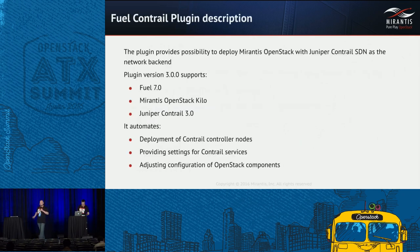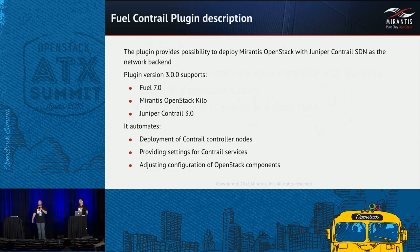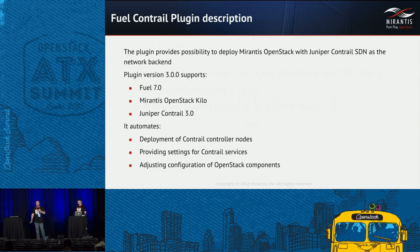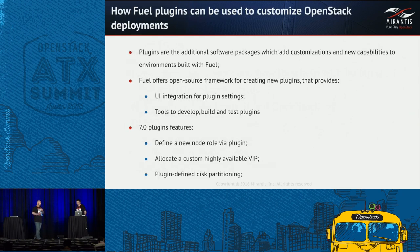Let me quickly explain the Fuel Contrail Plugin description. The Fuel Contrail Plugin provides the possibility to deploy Mirantis OpenStack with Juniper Contrail SDN as a network backend. The plugin version shown today supports Fuel 7.0, Mirantis OpenStack Kilo, and Juniper Contrail 3.0. This plugin automates deployment of Contrail controller nodes, providing settings for Contrail services and adjusting configuration of OpenStack components. I will now give the floor to Sasha, who will explain in more technical depth how it works.